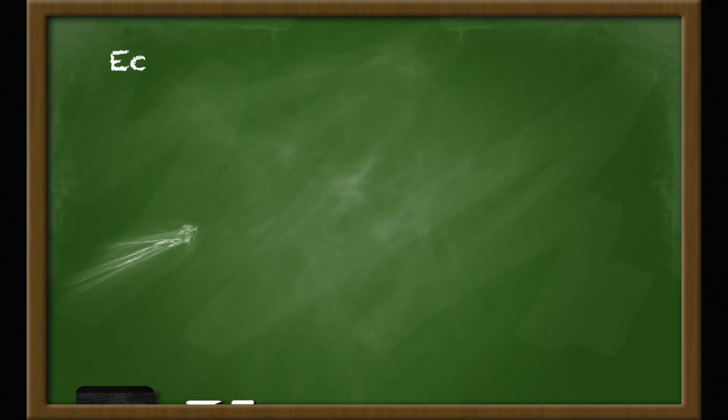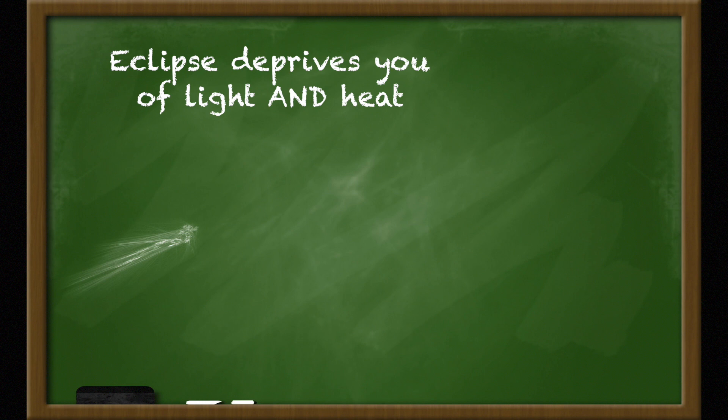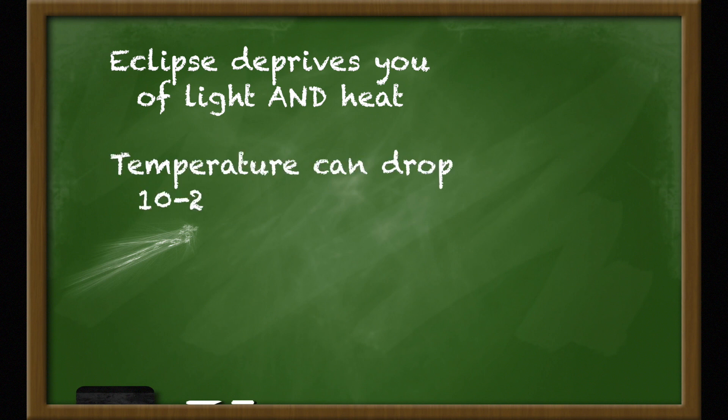Reason number three, eclipses are literally pretty cool. When the sun is covered up, you're not only missing out on the sun's light, you're also missing out on the heat that it generates. During a total eclipse, you'll notice the temperature in the air drop by as much as 10 or 20 degrees Fahrenheit. You'll notice this less if you're someplace humid because humid air can store heat longer than dry air. But either way, the dramatic change is bound to give you the chills.